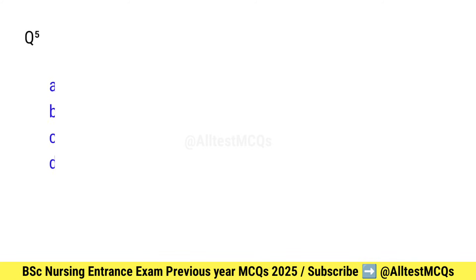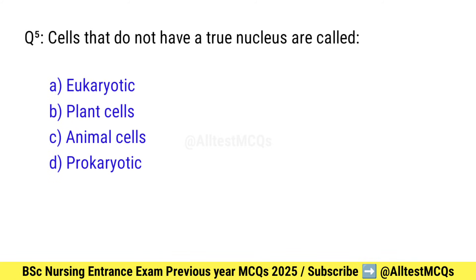Question number 5. Cells that do not have a true nucleus are called what? Right option is D: Prokaryotic.